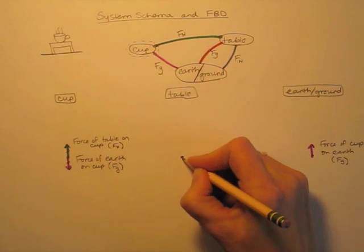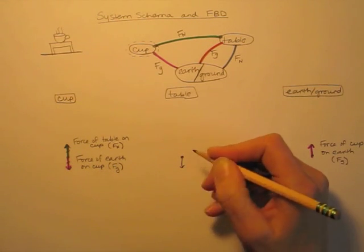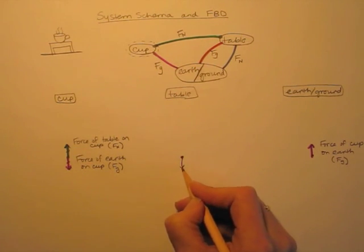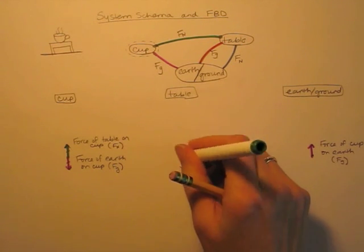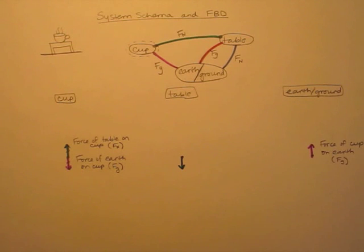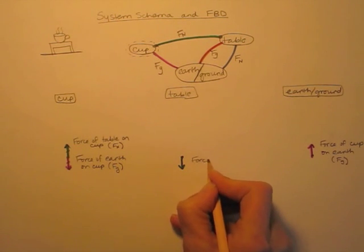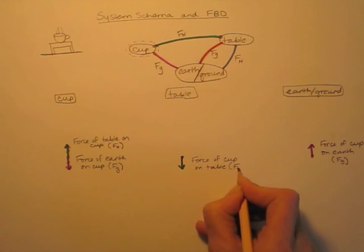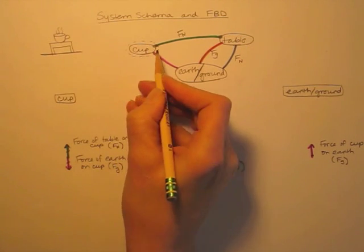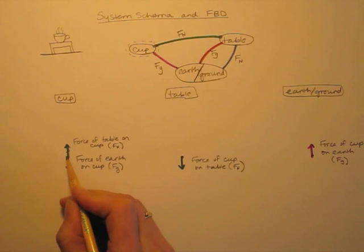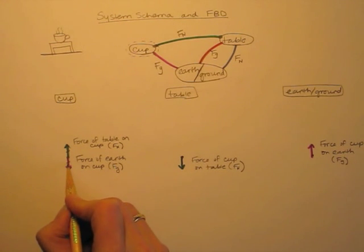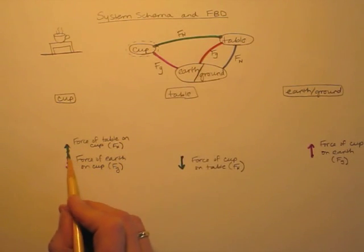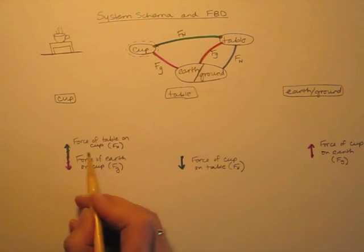The cup is pushing down on the table. Interaction forces always have the same magnitude, so this has the same length as the upward normal force on the cup. That's color coded green. Labeling it, that is the force of the cup on the table. Now we've finished the free body diagram for the cup — there are two forces on the cup and I have both on the free body diagram. You'll notice that the interaction force pairs do not show up on the same force diagram; the other pink force was over here, and the other green force was over here.